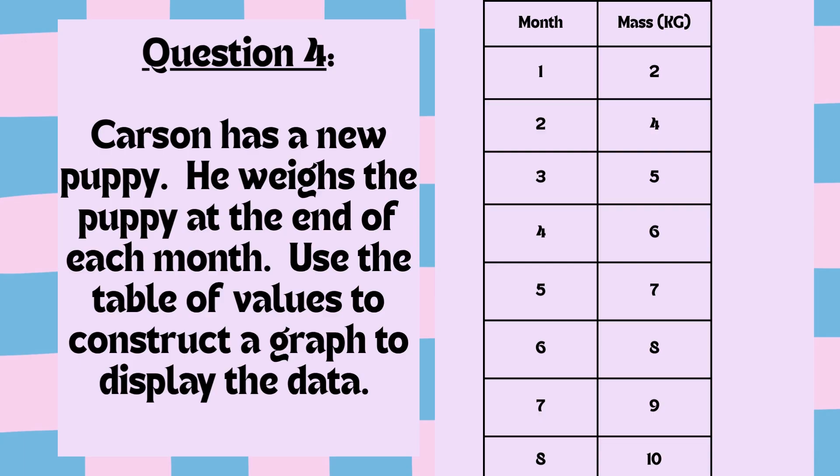Under month, there are the numbers listed 1 through 8. And under the mass in kilograms, the mass varies from 2 to 10. Pause the video and try creating your graph using the data table.